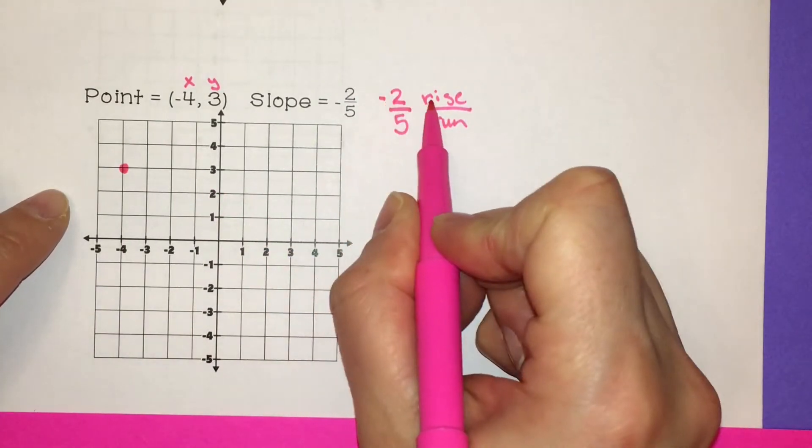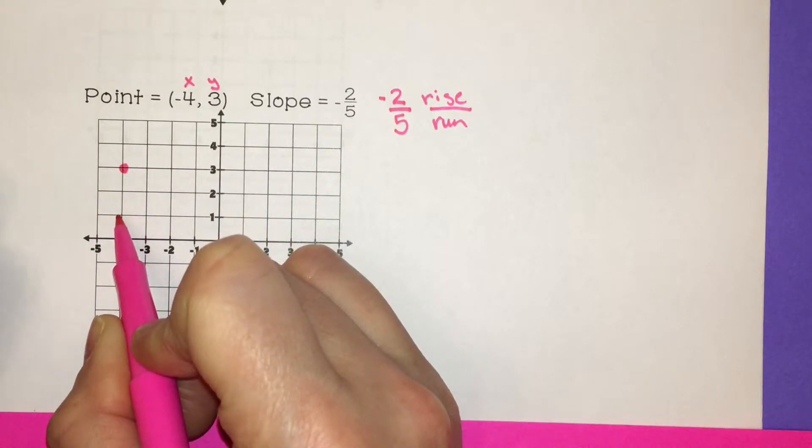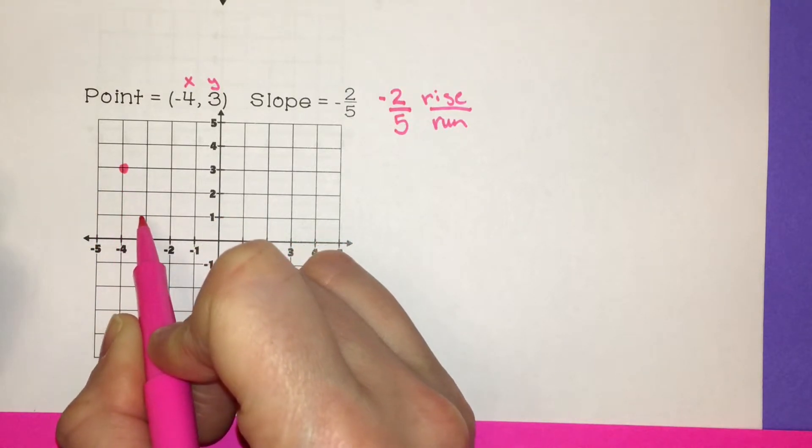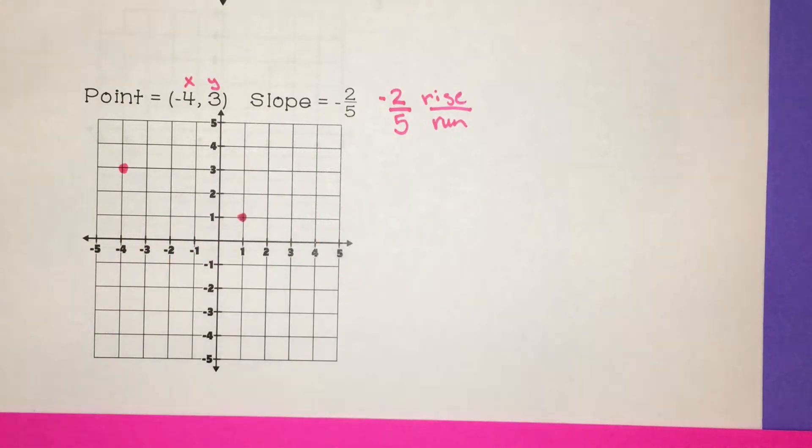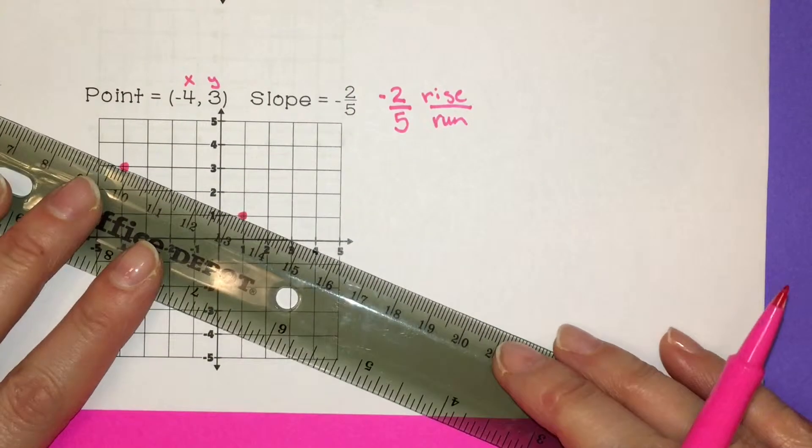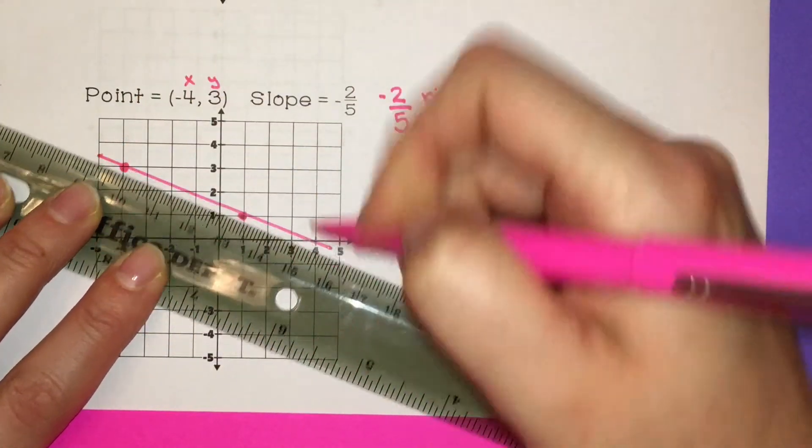All right, so negative rise means down 2. So from my point that I start at, I go down 2 for my rise. My run's positive 5, so to the right 5: 1, 2, 3, 4, 5. There's my second point. I'm going to connect them. And this is my graph.